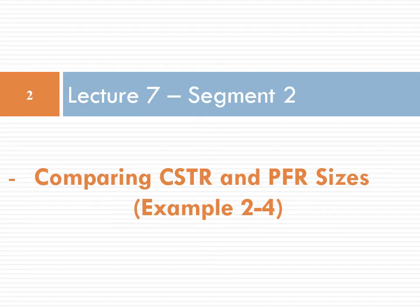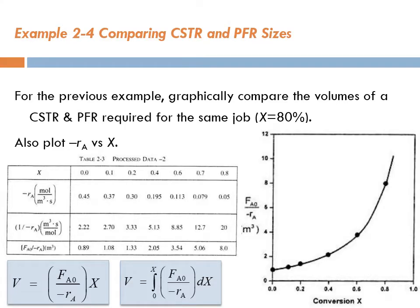Welcome back to segment 2 of lecture 7. Here we're going to solve Example 2.4, where we're going to compare CSTR to plug-flow reactor sizes. For the previous example, we'll graphically compare the volumes of a CSTR and plug-flow reactor required for the same job, meaning to achieve the same conversion.